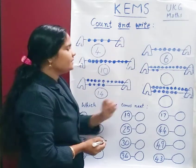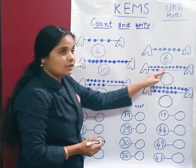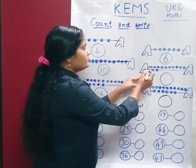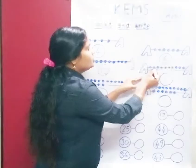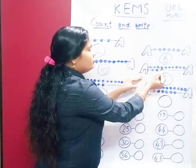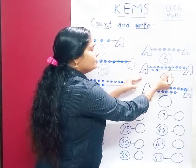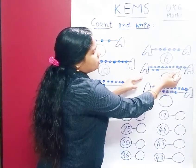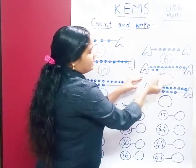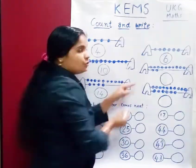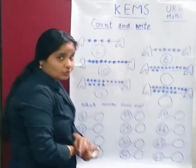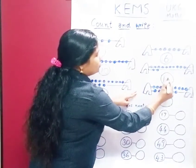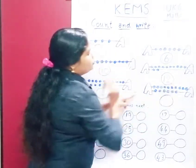Then here, how many beats? 1, 2, 3, 4, 5, 6, 7, 8, 9, 10, 11, 12. So 12 beats are here. 12.